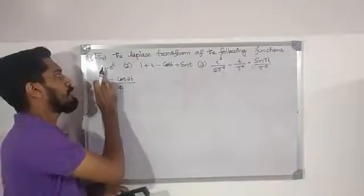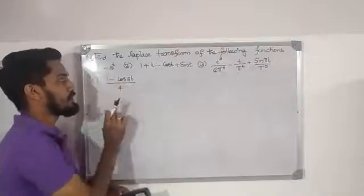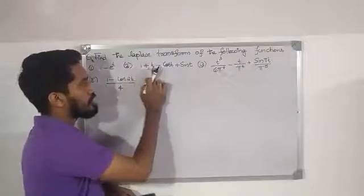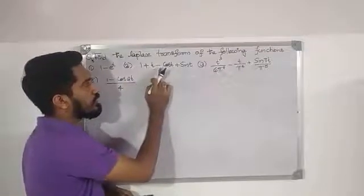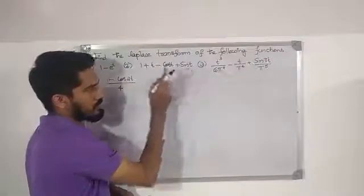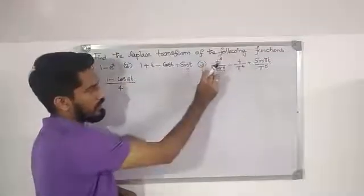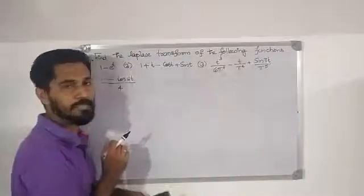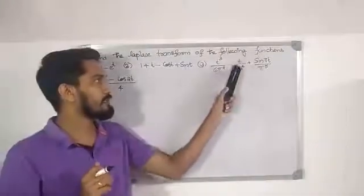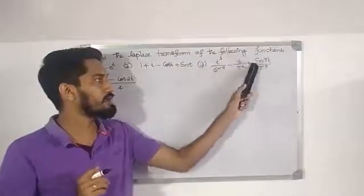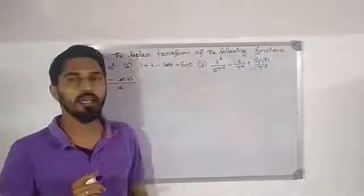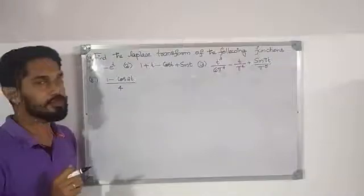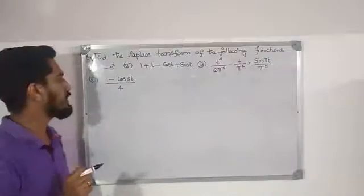The first function is f(t) = 1 minus e^t. The second is 1 + t minus cos(t) plus sin(t). The third involves t^3/(6π²) minus (t/π)^4 plus sin(πt)/π^5. The fourth is 1 minus cos(2t), all divided by 4.